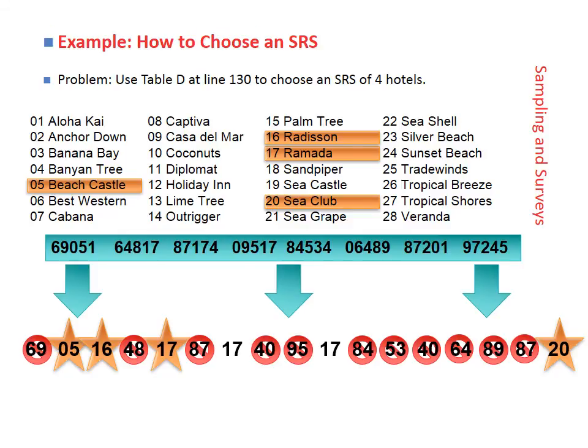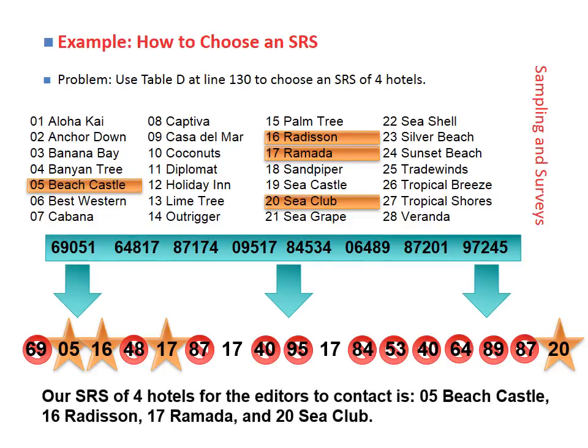The last one we get is 20, which corresponds to the Sea Club Hotel. So using this table of random digits, we've chosen Beach Castle, Radisson, Ramada, and Sea Club. Watch this video as many times as you need to. I recommend trying the corresponding problems in the textbook, especially the odd ones so you can check your answers. Post any questions on Edmodo and we'll practice this in class.